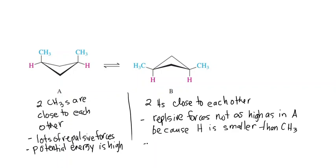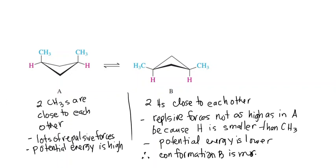Therefore, potential energy is lower. Conformation B is more stable because the potential energy is lower.